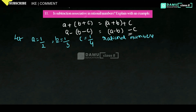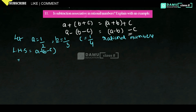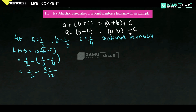What is the LHS, A minus (B minus C)? That is 1/2 minus (1/3 minus 1/4). So first subtract these two: take LCM 12, we get (4 minus 3) over 12. Because 3 multiplied by 4 gives 12, and 4 multiplied by 3 gives 12. So 1/3 minus 1/4 equals 1/12.